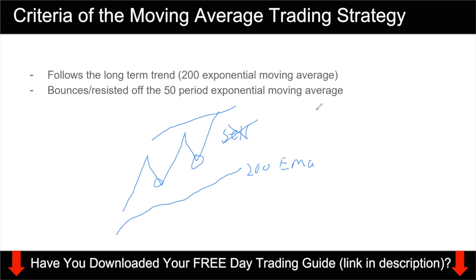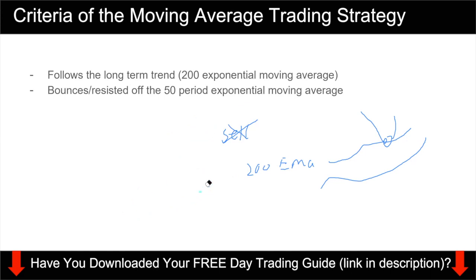Criteria number two is that we are going to use another exponential moving average, which is the 50-period exponential moving average. You want to see price bounce off it. So you have the 200 moving average, and then you have the 50-period moving average. You want to see price come to the 50-period moving average and bounce off. This is a bullish example, and I will go into the charts later to show you how to apply this.